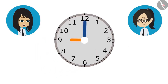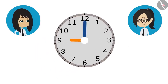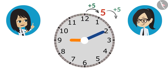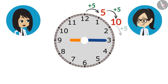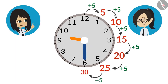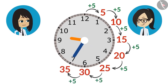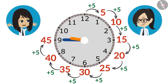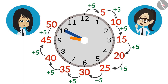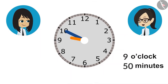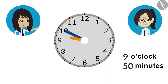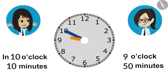So for that we will look at the minute hand. Right now, the minute hand is at 12. When we bring it to 1, it will be 5 minutes. When we bring it to 2, it will be 10 minutes. 15 at 3, 20 at 4, 25 at 5, 30 at 6, 35 at 7, 40 at 8, 45 at 9, and it will be 50 minutes at 10. This means our class will end at 50 minutes past 9 o'clock. And we can also say the class will end 10 minutes to 10 o'clock.